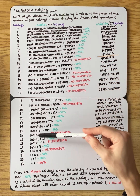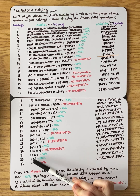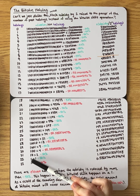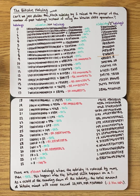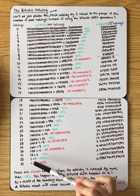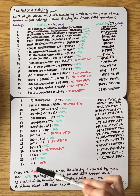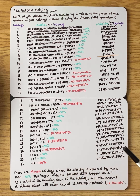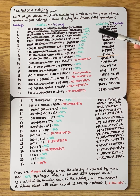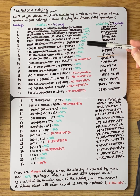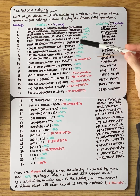We get all the way down to the point where we've only got one digit left — just the one. And then when there are no more digits left, that's where the block subsidy goes to zero, and it stays there permanently after the 33rd halving.